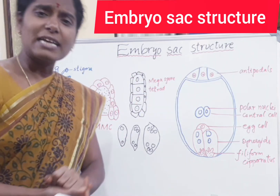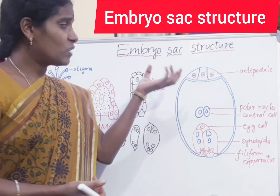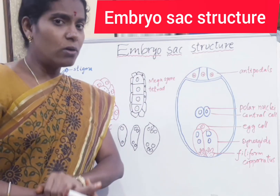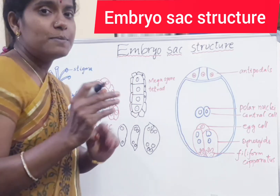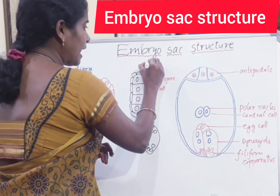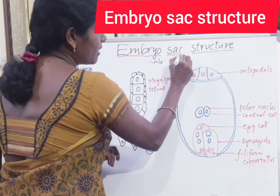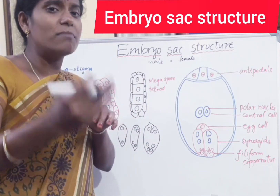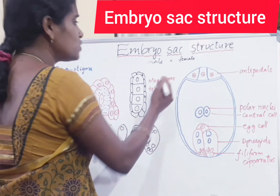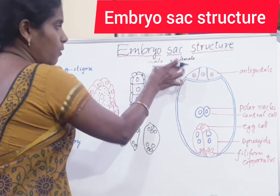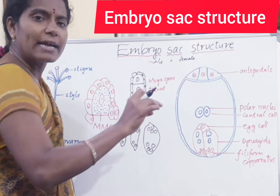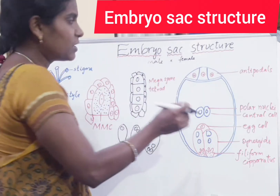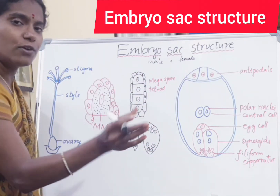Before entering the concept, let me give you a small introduction: what is sexual reproduction in angiosperms, that means the flowering plants? If we observe the flowering plants, they undergo sexual reproduction. In sexual reproduction, male and female gametes undergo fusion and that develops into a zygote. The zygote undergoes different mitotic divisions and that develops into an embryo. Now we are going to discuss the female gametophyte — the female gamete in plants — that is the embryo sac.